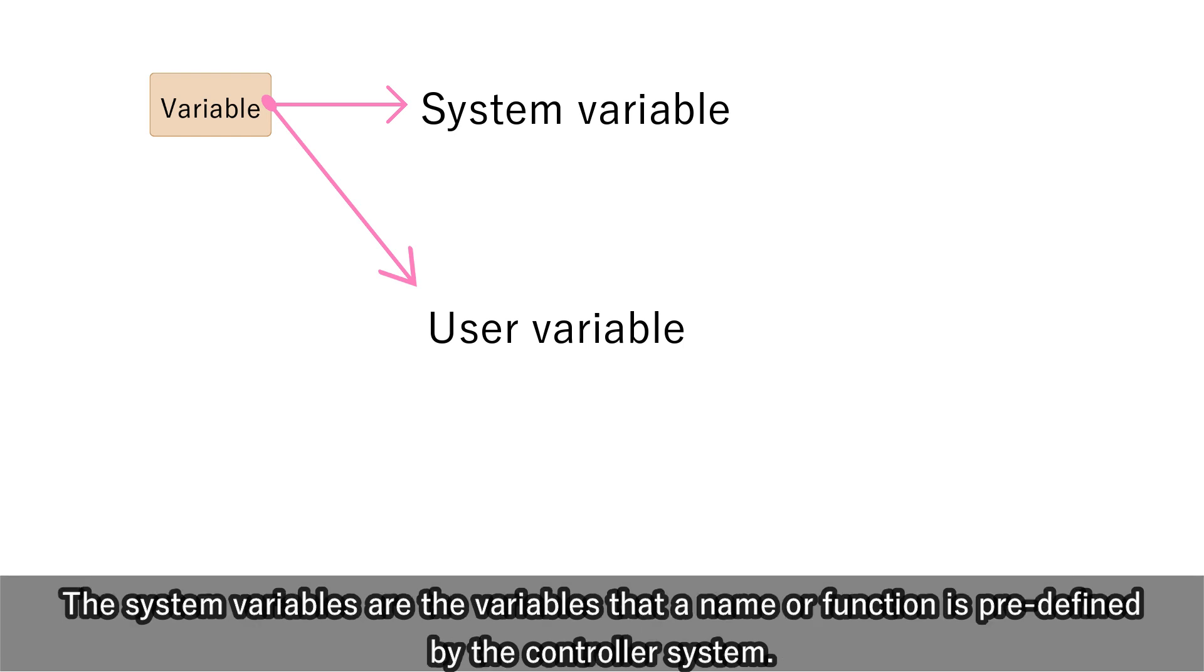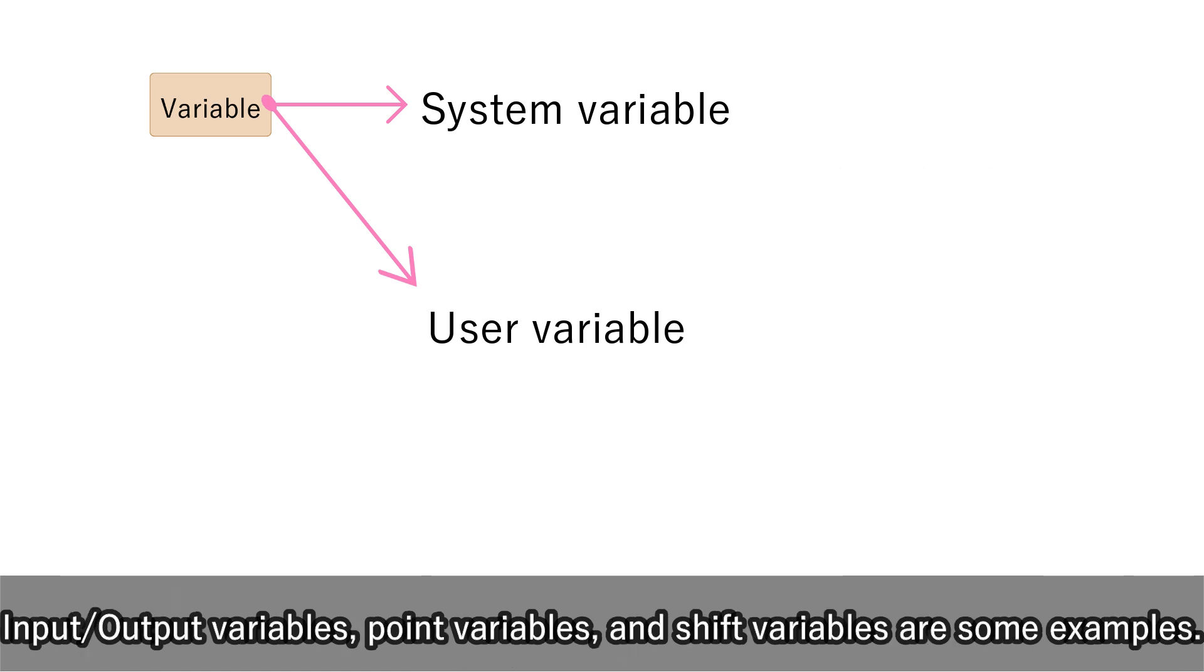The variables can be divided into two categories: system variables and user variables. The system variables are the variables that a name or function is predefined by the controller system. Input and output variables, point variables, and shift variables are some examples.